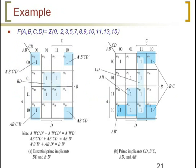Let us see these with examples. I have plotted a particular function on the right-hand side and taken this K-map, going with groupings of maximum size. Here the maximum size is 4, and again 4, and again 4 for each group. In this particular map, the essential prime implicants are BD and B-bar D-bar. This group is not covered by any other prime implicant, which is why it is called an essential prime implicant. The prime implicants in the second map are CD, B-bar C, AD, and A-bar B.